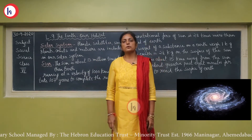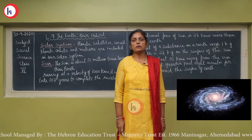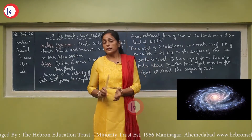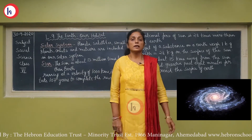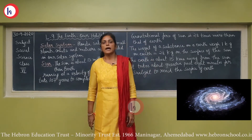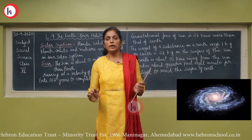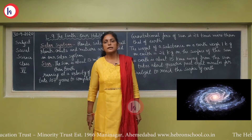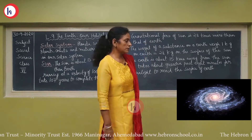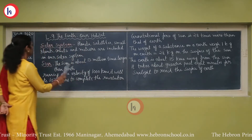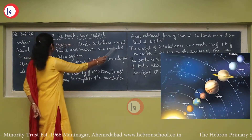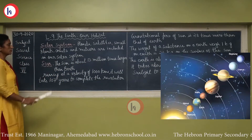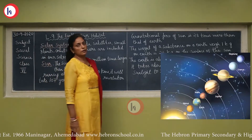Due to the gravitational force of the sun, planets move around the sun in a circular form. These planets are of different sizes and shapes, and together they make the solar system, or solar family. The sun is the key member of the solar system. The solar system includes planets, satellites, small planets, comets, and meteors.